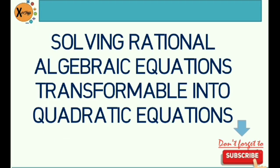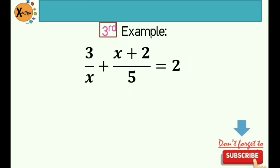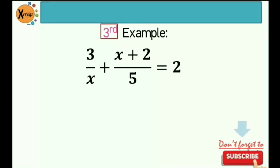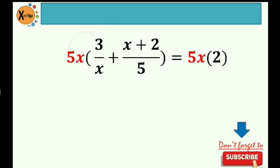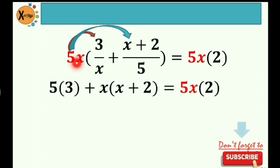So our second part is solving rational algebraic equations transformable into quadratic equations. Our third and final example: 3 over x plus x plus 2 all over 5 is equal to 2. The first thing that we need to do here is to find the least common multiple of our two denominators, and that is 5x. So we need to multiply 5x to both sides of the equation, and on the left side distribute it to the terms inside the parentheses.